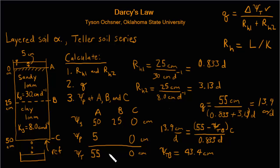So then we can fill in our table here. This has to equal 43.4, and then by difference, we can see that our pressure potential at B is essentially 18 centimeters.